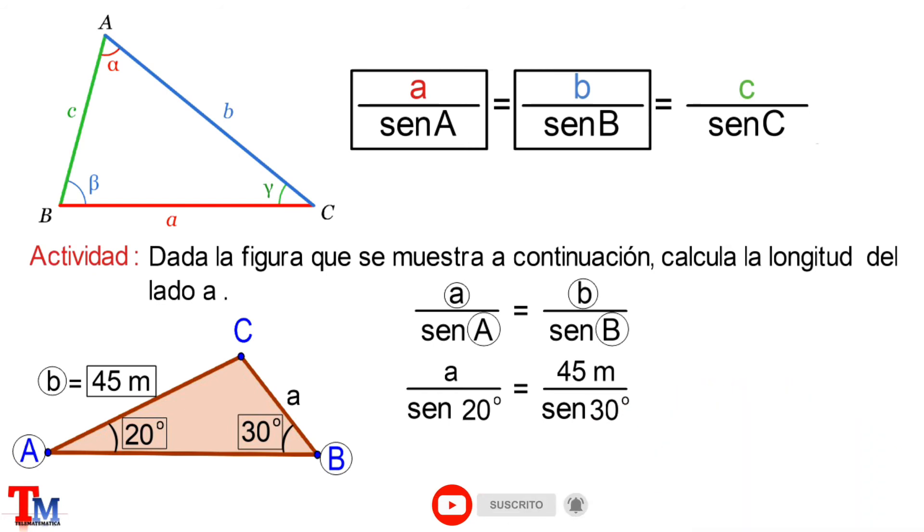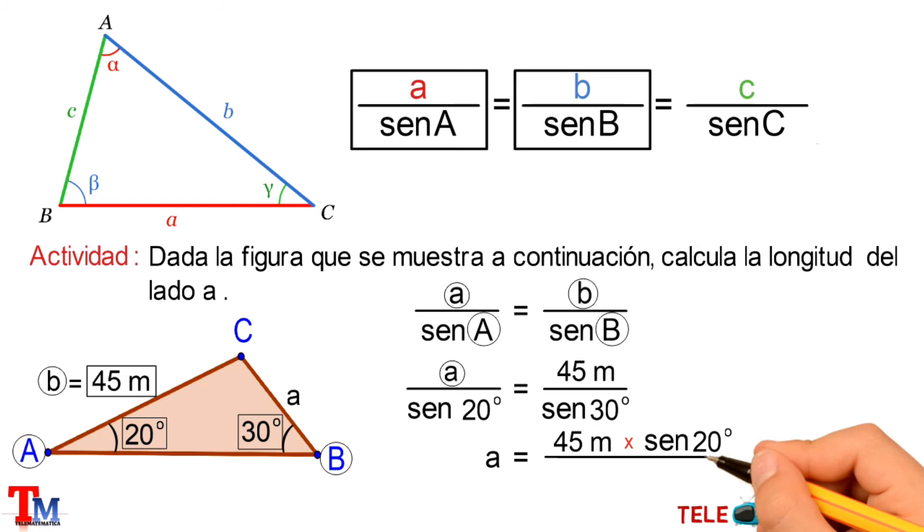Muy bien, a continuación despejamos la longitud del lado a, que va a ser igual a 45 metros multiplicado por el seno de 20 grados dividido para el seno de 30 grados.